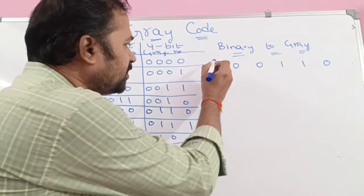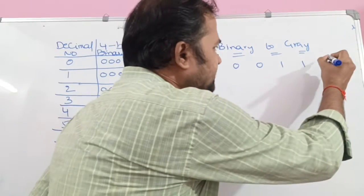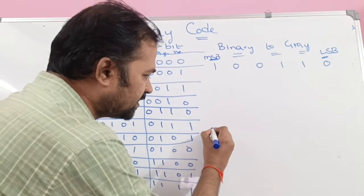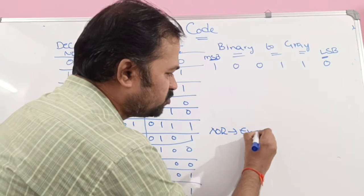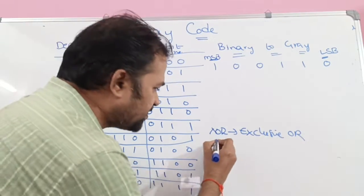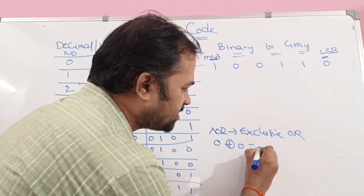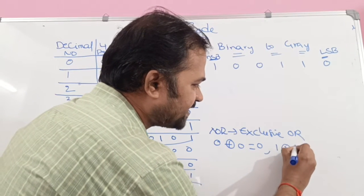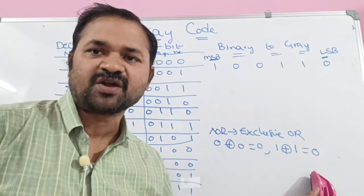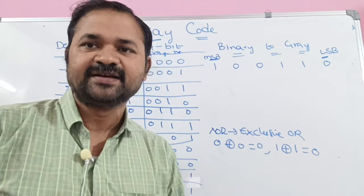The procedure is very simple. This leftmost bit is called the most significant bit, whereas this rightmost bit is called the least significant bit. Here we need to perform XOR operation — exclusive OR. If the bits are same, the result is 0. So 0 XOR 0 is equal to 0, as well as 1 XOR 1 is equal to 0, because the bits are same.